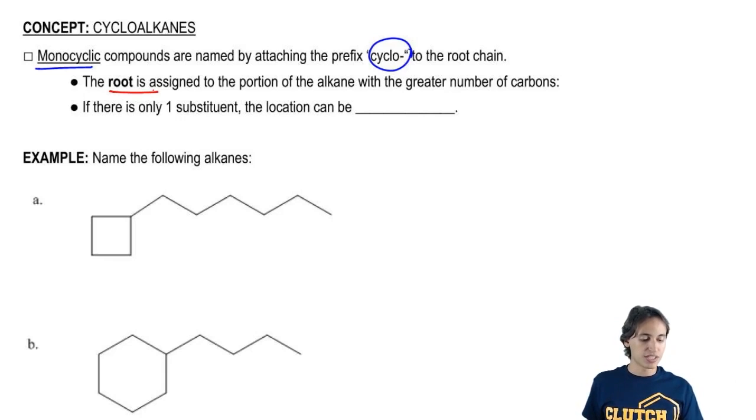The root is assigned to the portion of the alkane with the greater number of carbons. Now where this comes into play is that usually it's really obvious which one is bigger or which one is going to get the root name.